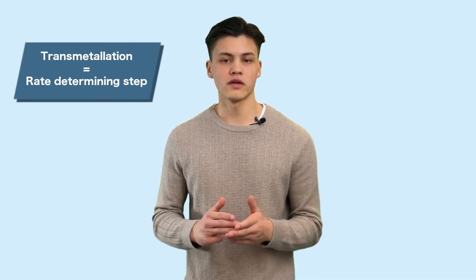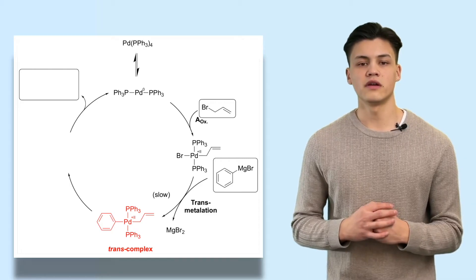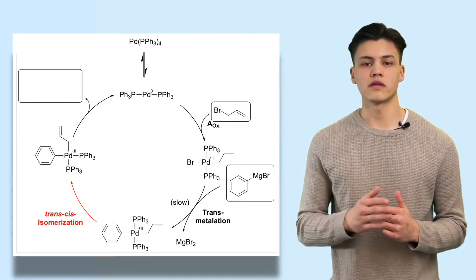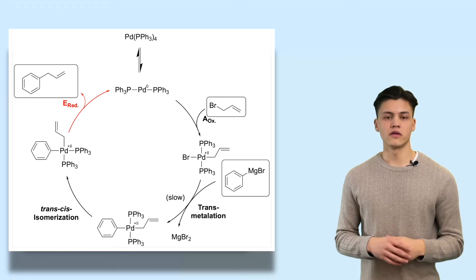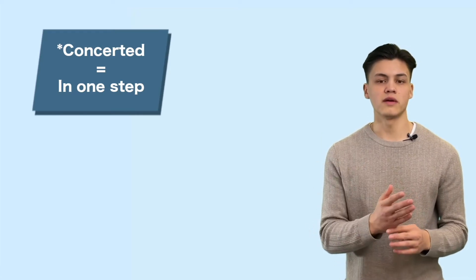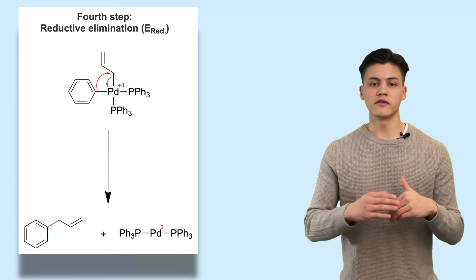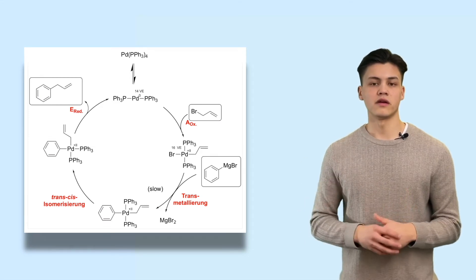The transmetalation step is actually the rate-determining step — the slowest of all steps. Looking at this intermediate, we have two organic ligands bonded in trans position to the palladium catalyst. The next step is a very fast trans-cis isomerization. This is important because the following reductive elimination is concerted — it goes in one step and therefore cannot occur if the two ligands are trans to each other. In the reductive elimination, the two organic ligands form a single bond and give palladium two electrons back, reducing it to palladium(0) to start another catalytic cycle.